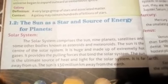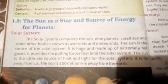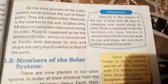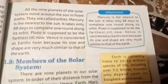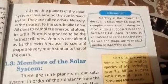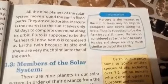The sun is far away from us — 150 million km away from the Earth. The sun provides forces to the solar system. All nine planets of the solar system move around the sun in fixed paths called orbits.